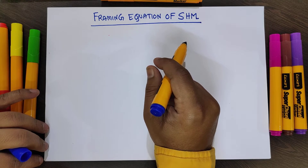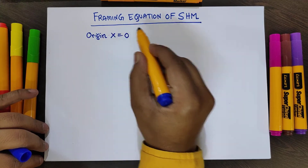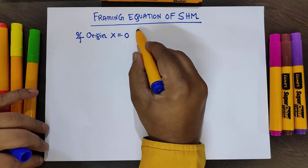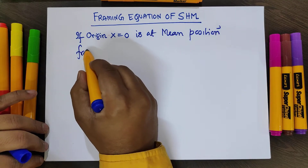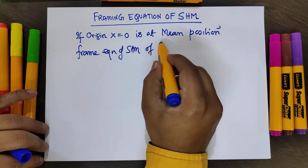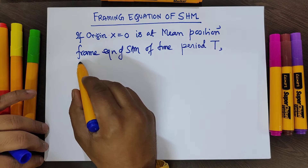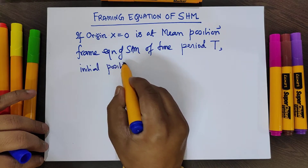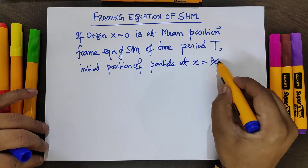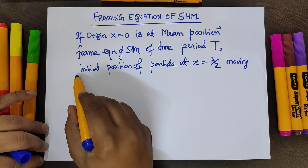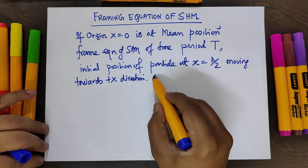For framing the equation of simple harmonic motion, two things are most important: where is x equal to 0. The origin, x = 0, is at the mean position. Then we frame the equation of SHM with time period T, and the initial position of the particle at x = a/2, moving towards the positive x direction, where a is the amplitude of the SHM.